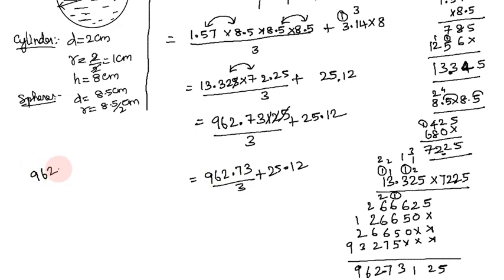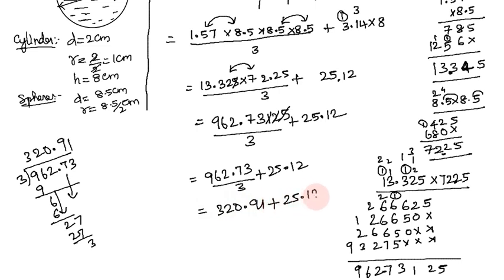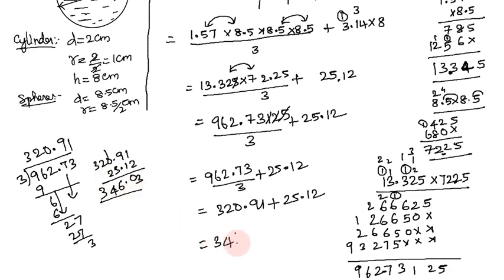Adding 20.91 and 25.12: 1 + 2 = 3, 9 + 1 = 10 carry 1, 5 + 1 = 6 (with carry), 2 + 2 = 4, giving approximately 46.03. The total volume of the glass vessel is approximately 346.03 cm³.